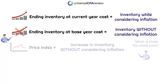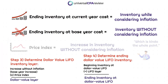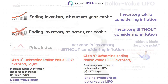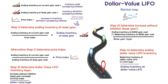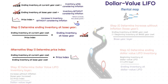When it comes to Dollar Value LIFO, there are two amounts they can ask you to calculate: the Dollar Value LIFO inventory layer, or the ending inventory balance using Dollar Value LIFO. Both of those correspond to steps three and four in our mental map. We'll simplify this with a four-step approach, and the first step comes with two different possibilities depending on how the question is asked — either determine the ending inventory at base year cost, or determine the price index amount.